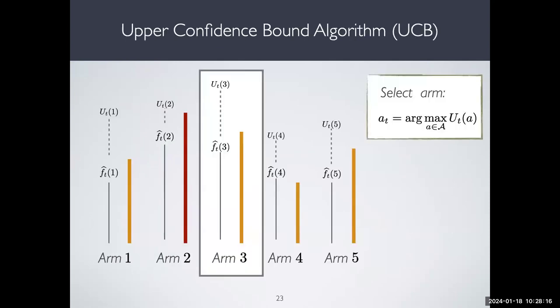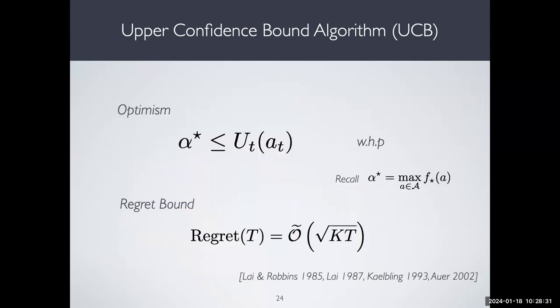The upper confidence bound algorithm, UCB, is very simple: at every time step, compute the u-t values for all arms, then pick the arm that has the largest one.